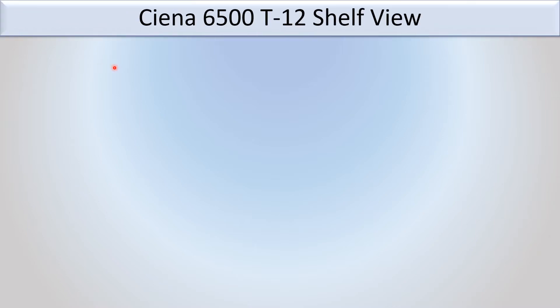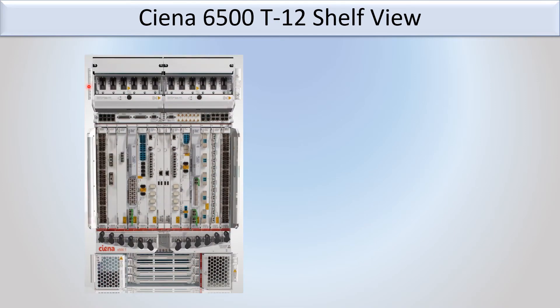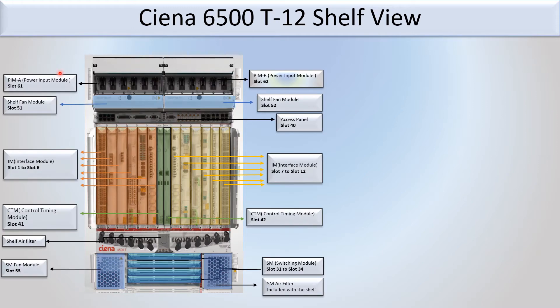Hello friends, today we will discuss the C&S 6500 T12 shelf view. You can see here this is the C&S 6500 T12 shelf view — these are the nomenclature for the different components and cards used in the C&S 6500 T12.